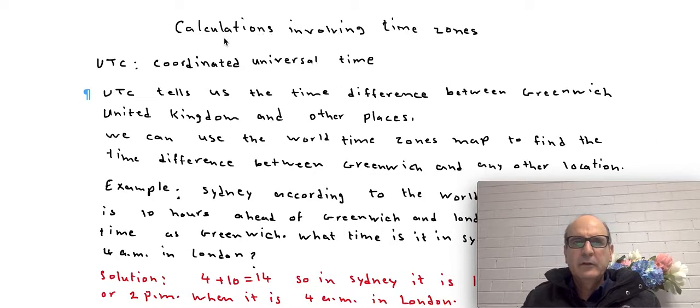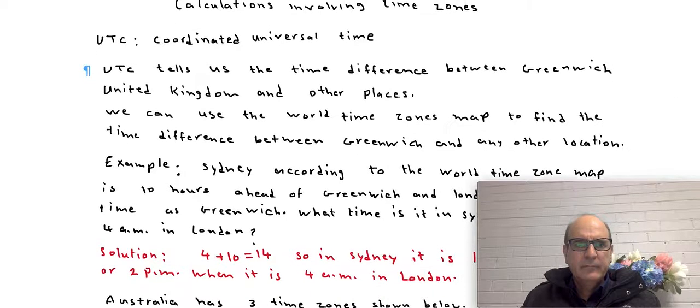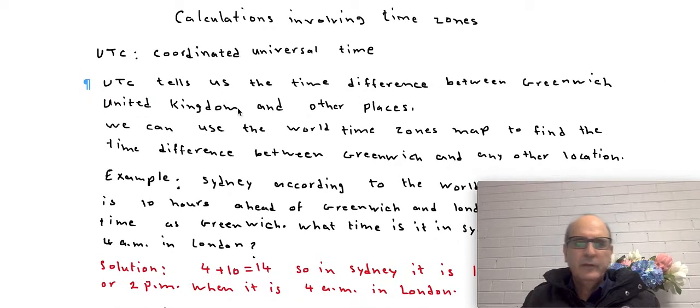Today's lesson is about calculations involving time zones. First we got to look at some terminology. UTC means Coordinated Universal Time.